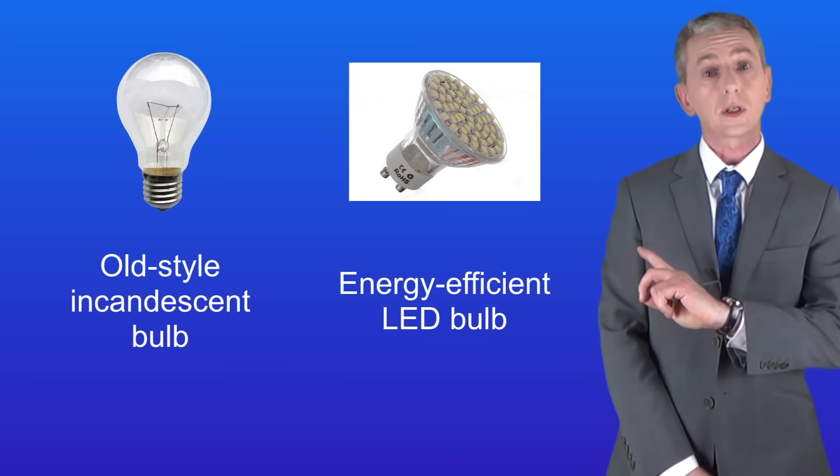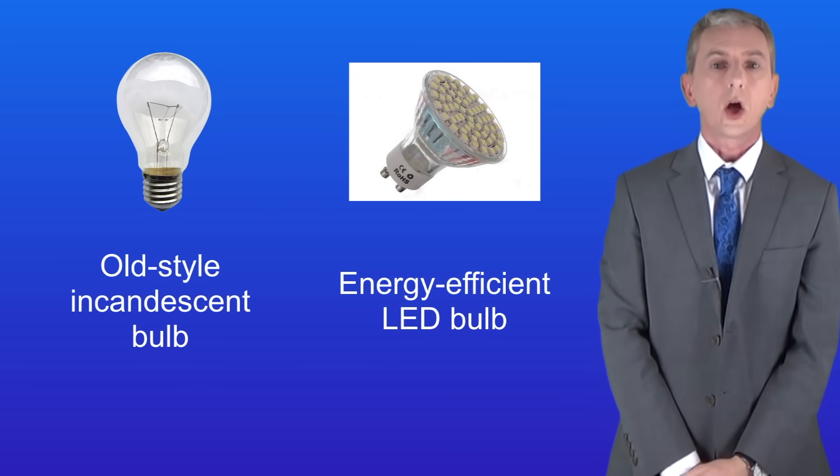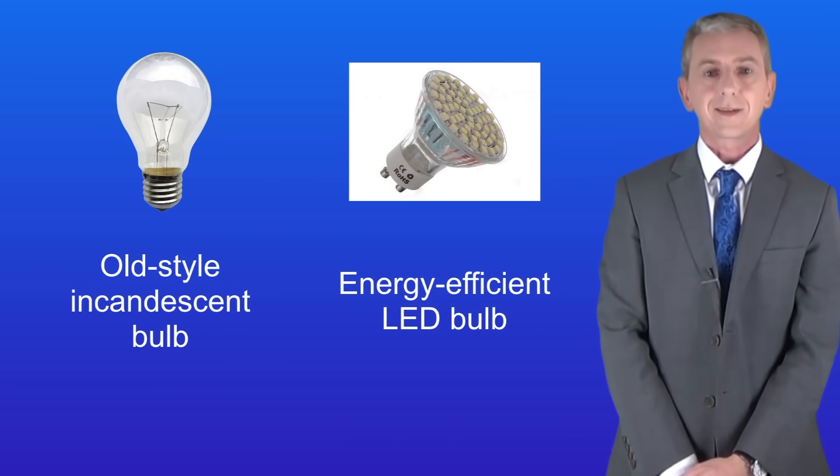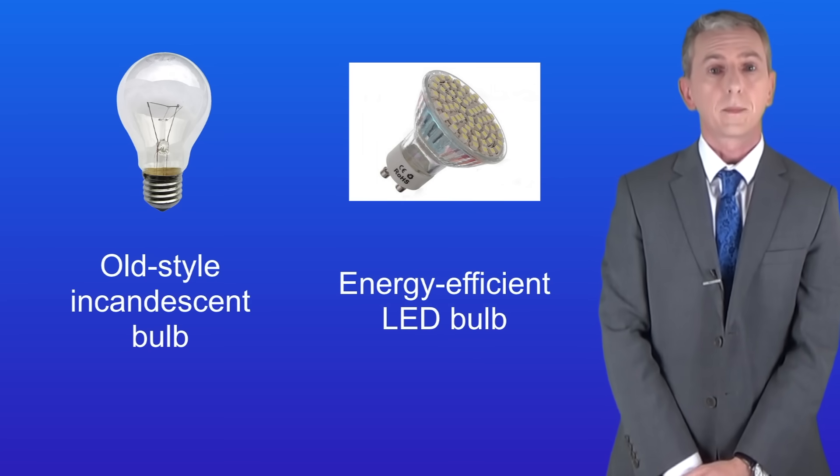I'm showing you here two different types of light bulbs. On the left we've got an old-style incandescent bulb. These are being phased out but you can still find them in buildings. On the right hand side we've got an energy efficient LED bulb. These are now increasingly popular in homes around the UK.